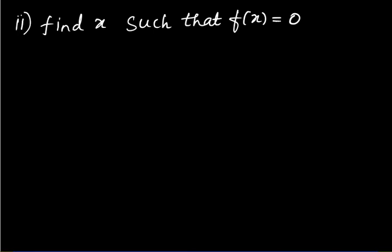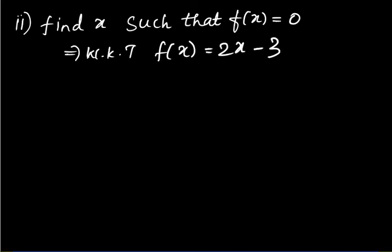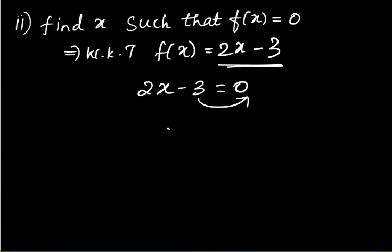Second part of Q6: find x such that f(x) = 0. Set f(x) = 0, so 2x − 3 = 0. Take 3 to the other side: 2x = 3. Then divide by 2: x = 3/2.